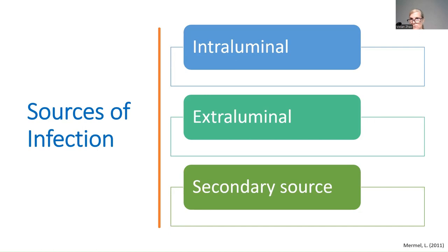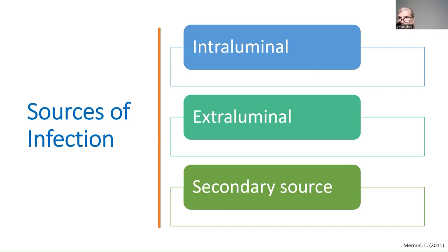There are three sources of infection: intraluminal, extraluminal, and secondary. Intraluminal means the infection came from within the catheter — the catheter hub or a contaminated fluid source. Extraluminal means the infection comes from outside, usually bacteria at the exit site or skin contaminant. A secondary source could be concurrent urosepsis or translocation of bacteria, which we see more commonly in GI dysmotility patients — they're full of stool, stretch the bowel wall thin, and bacteria can translocate more easily.